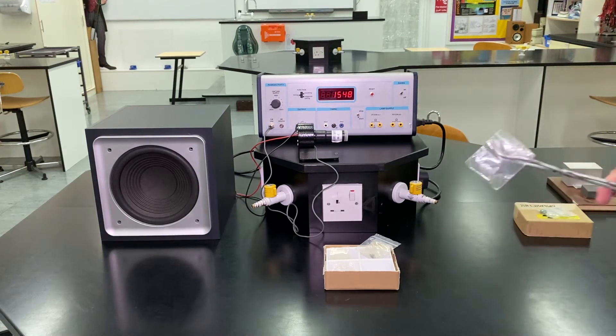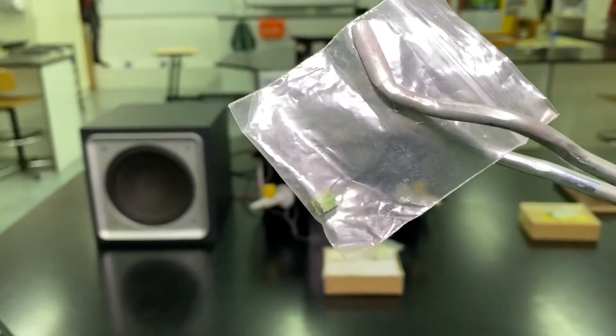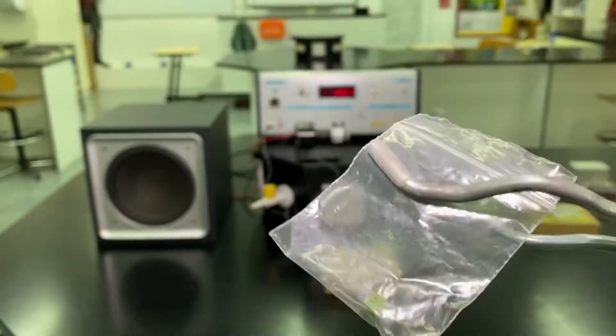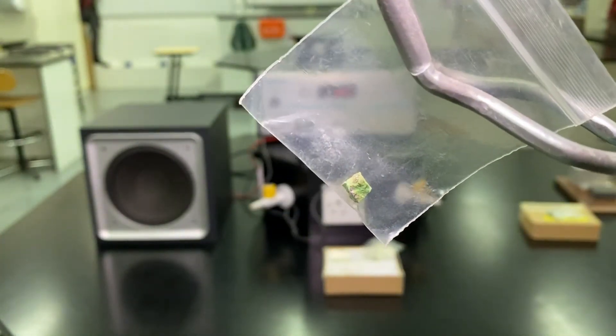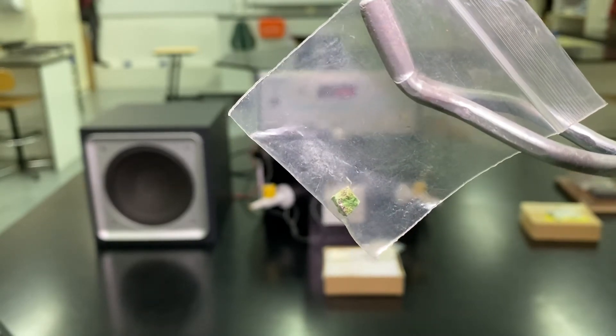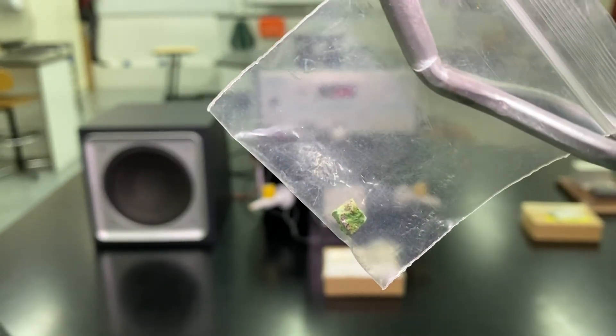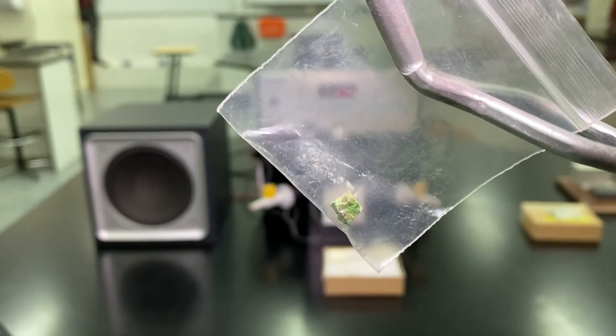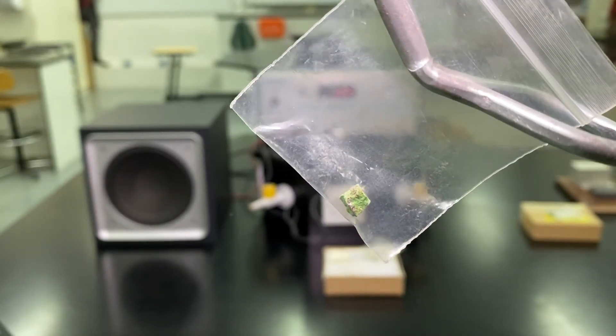So as you can see I'm using tongs and goggles at all times when dealing with these radioactive samples even though they are just radioactive minerals, radioactive rocks. So again, that's another green coloured one which I expect is containing compounds of copper in there.